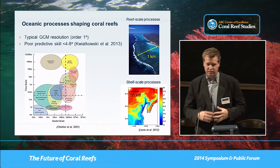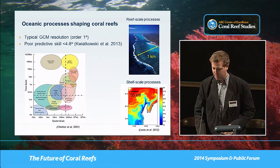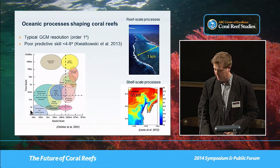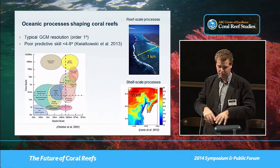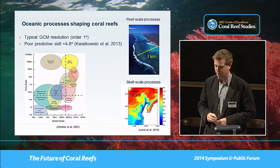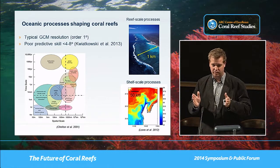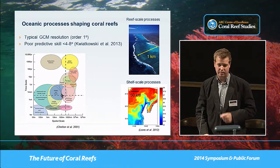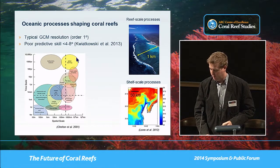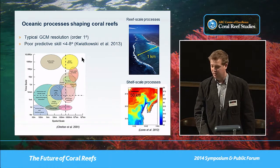Jim talked about challenges with scale when predicting the future of reefs with respect to climate change. The ocean contains a wide range of hydrodynamic and water motion processes that affect temperature variability on different scales — from small-scale wave breaking on reefs at around 10 meters, up to tidal motions, ocean boundary currents like the Lewin or East Australian current, and all the way to ocean basin-scale drivers like the ENSO cycle.